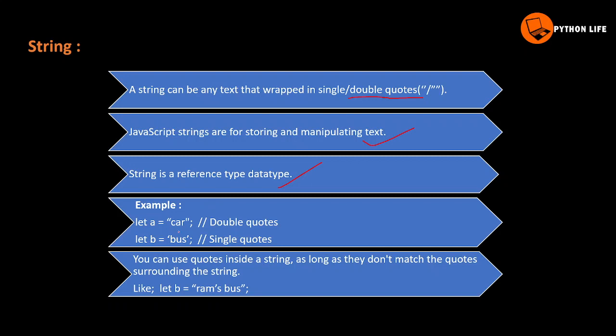For example, the first thing is that a string is wrapped in single or double quotes. If you have double quotes: let a equal to 'car'. Let b equal to 'bus' — it is wrapped in single quotes. It changes the string the same way.